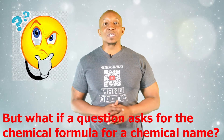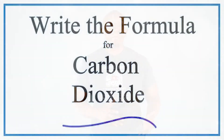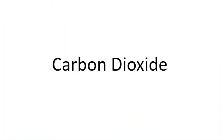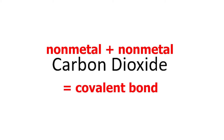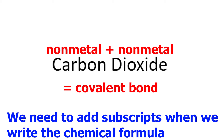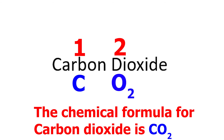But what if a question asks for the chemical formula of a chemical name? That's pretty simple since you know the rules now. Let's take a look at a simple example: carbon dioxide. Both elements are non-metals — carbon is, and so is oxygen — which means it is a covalent bond. This lets us know that we need to add subscripts when we write the chemical formula. There is one carbon, so the symbol would be C. There are two oxygens, so the symbol would be O2. So the chemical formula for carbon dioxide is CO2.